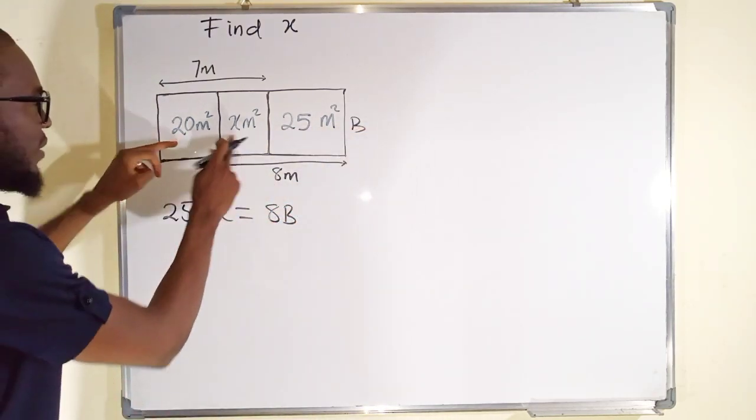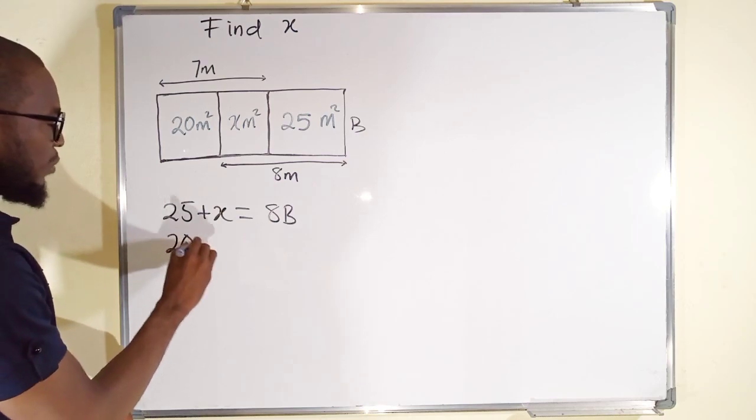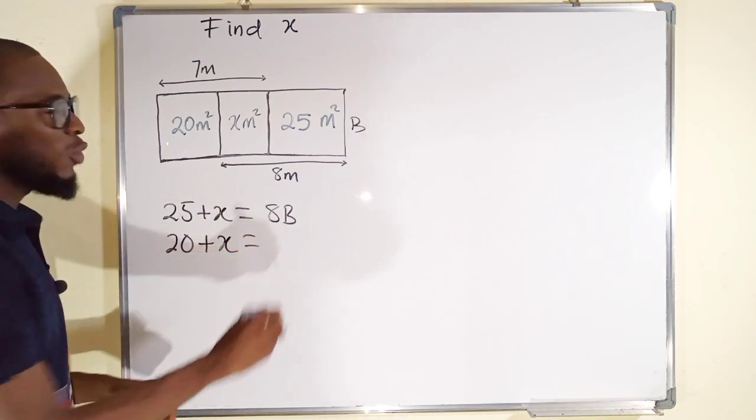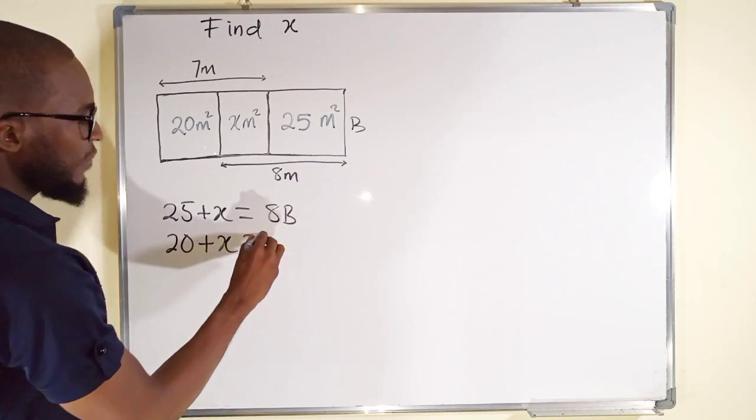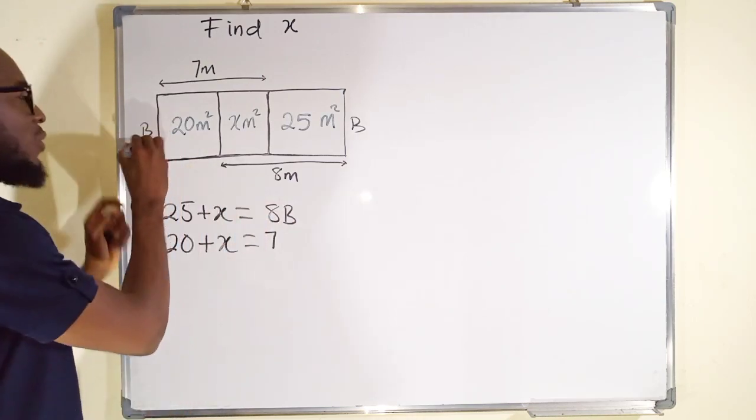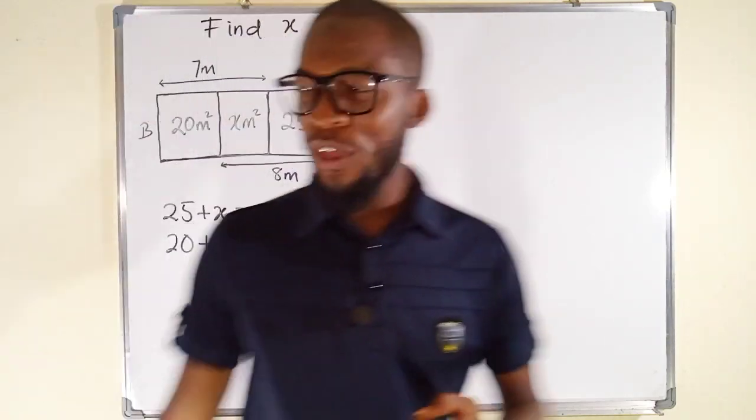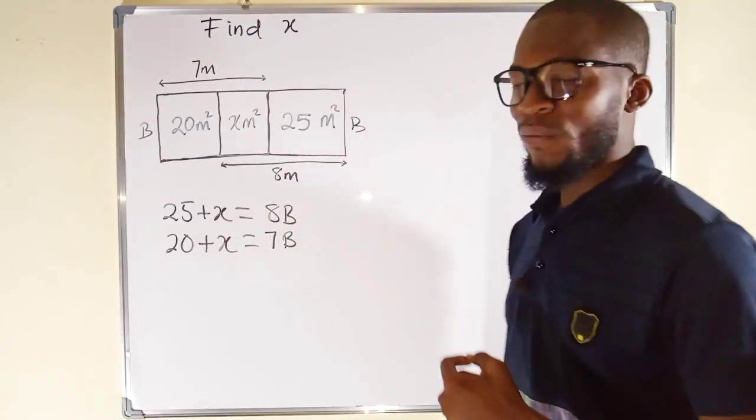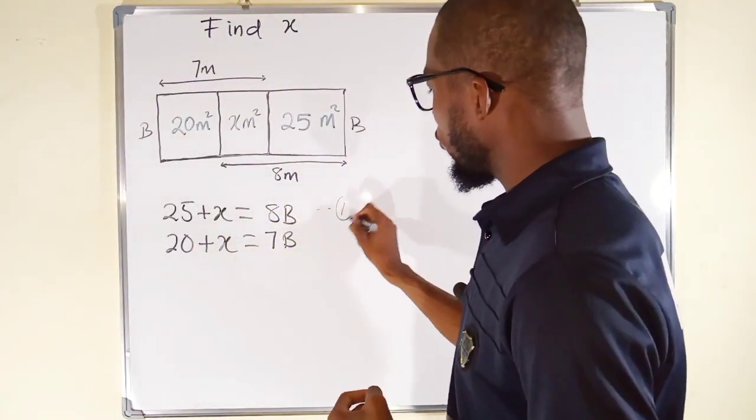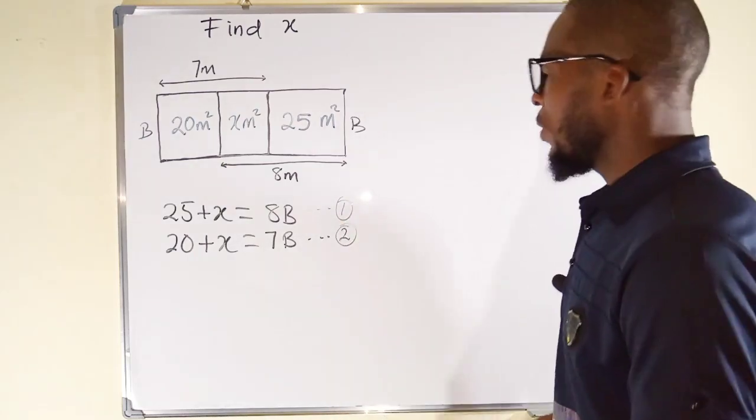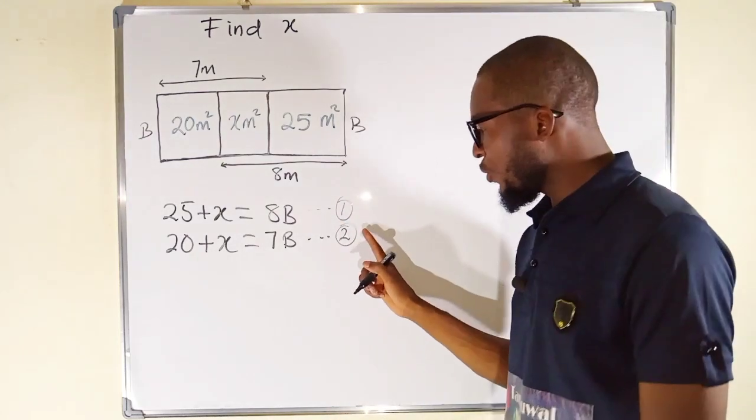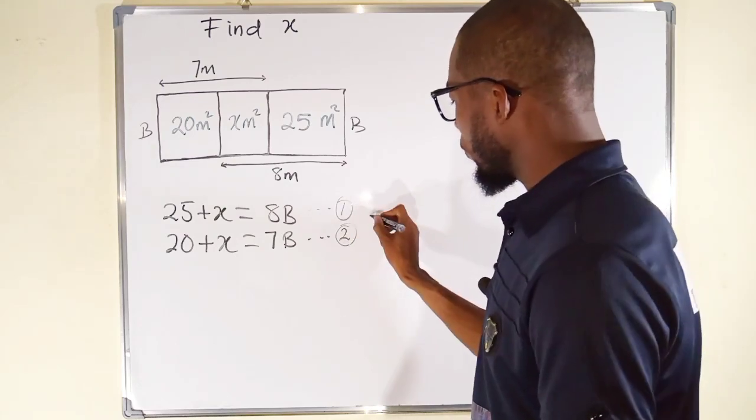Again, I can connect this and this together. 20 plus X will be equal to length. You can see their length is 7. Their breadth is also B. This is a simultaneous linear equations. You can see the two of them. This is equation 1. This is equation 2. Okay, now we can subtract equation 2 from 1. So, I can subtract it from here.